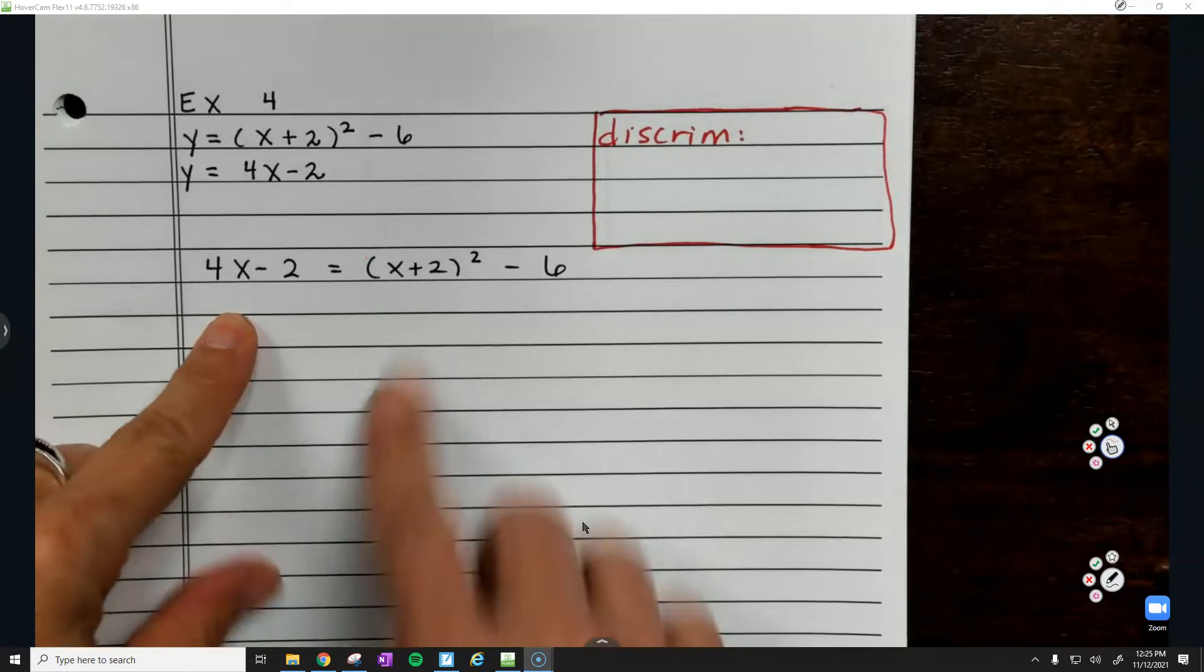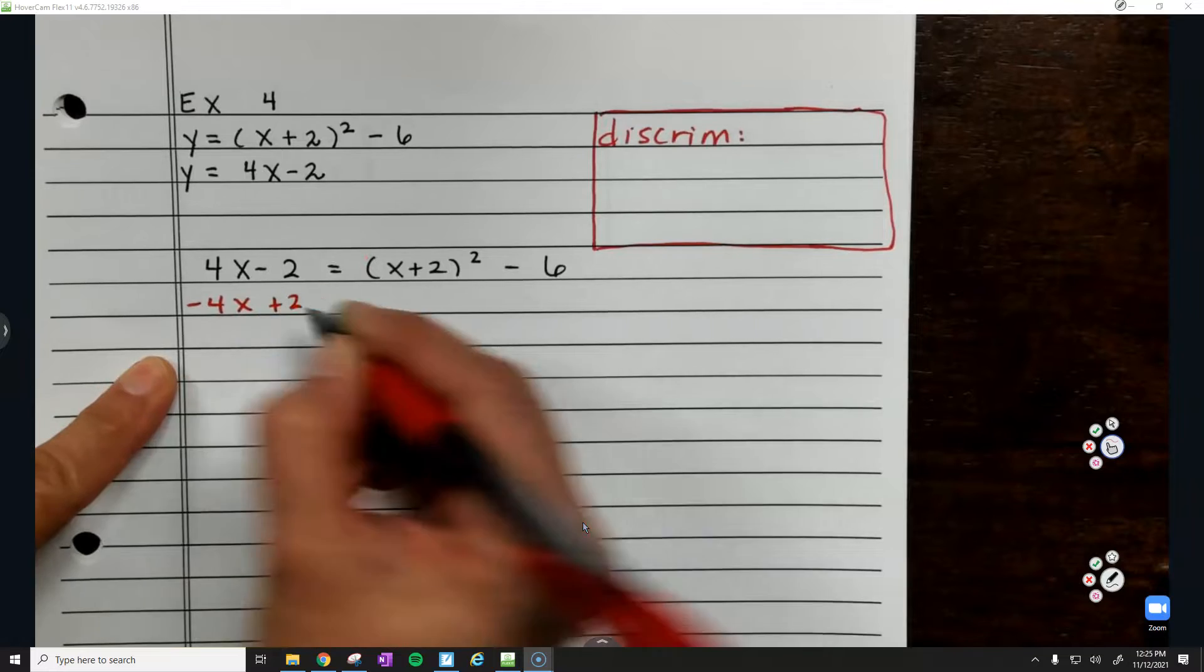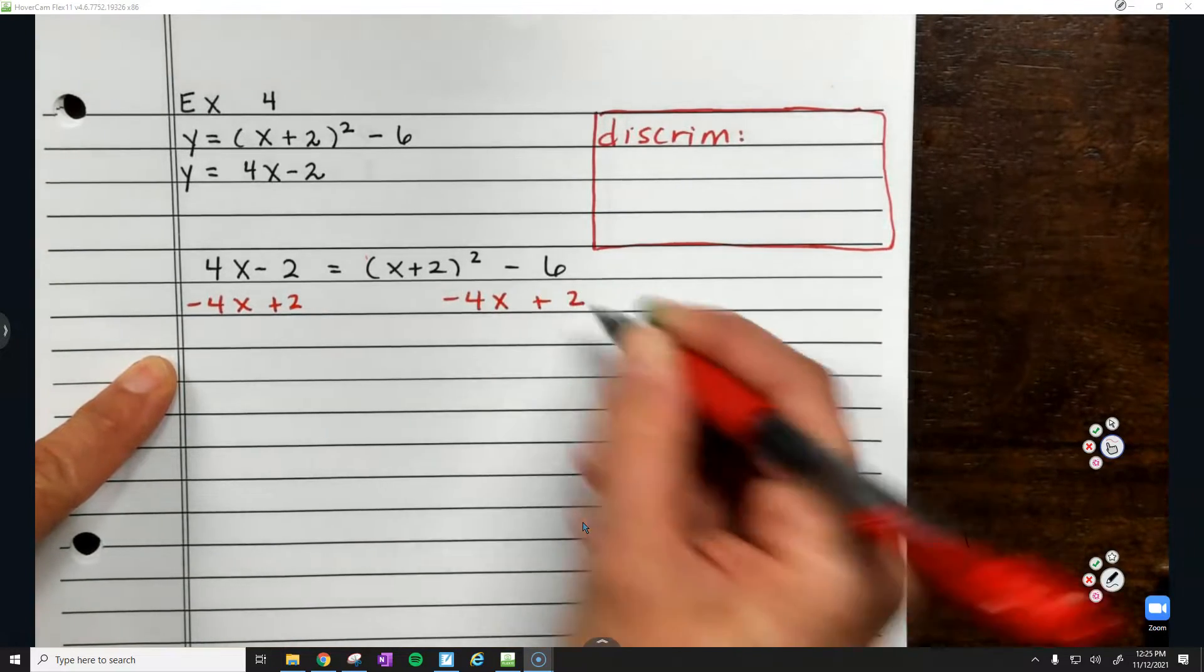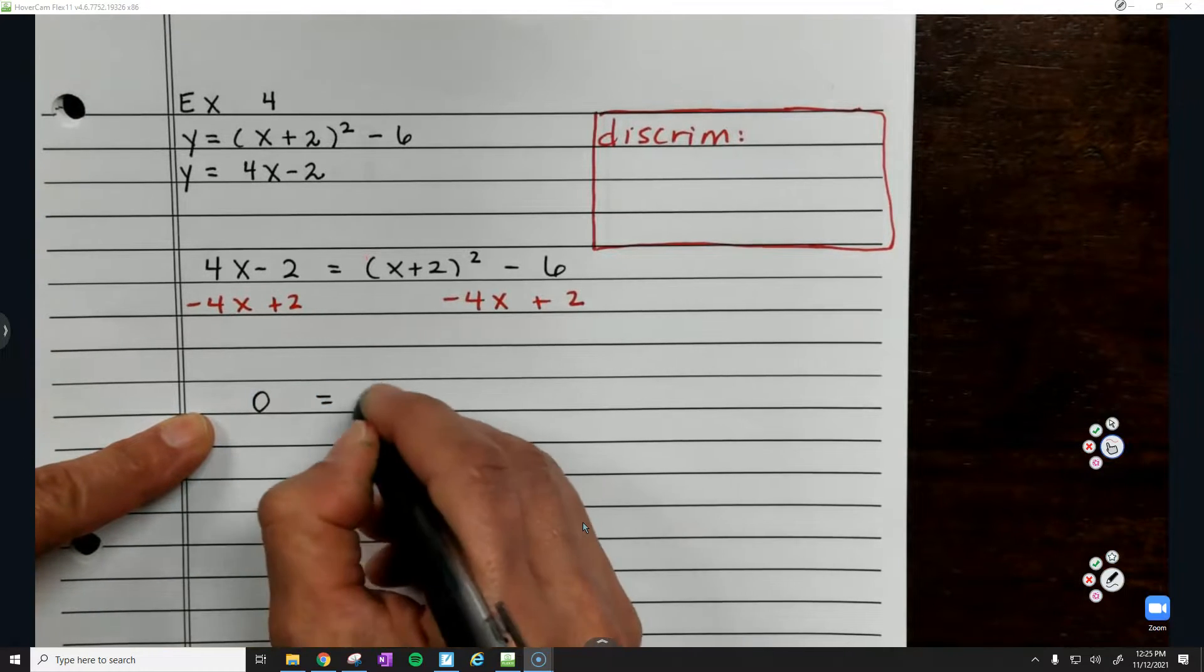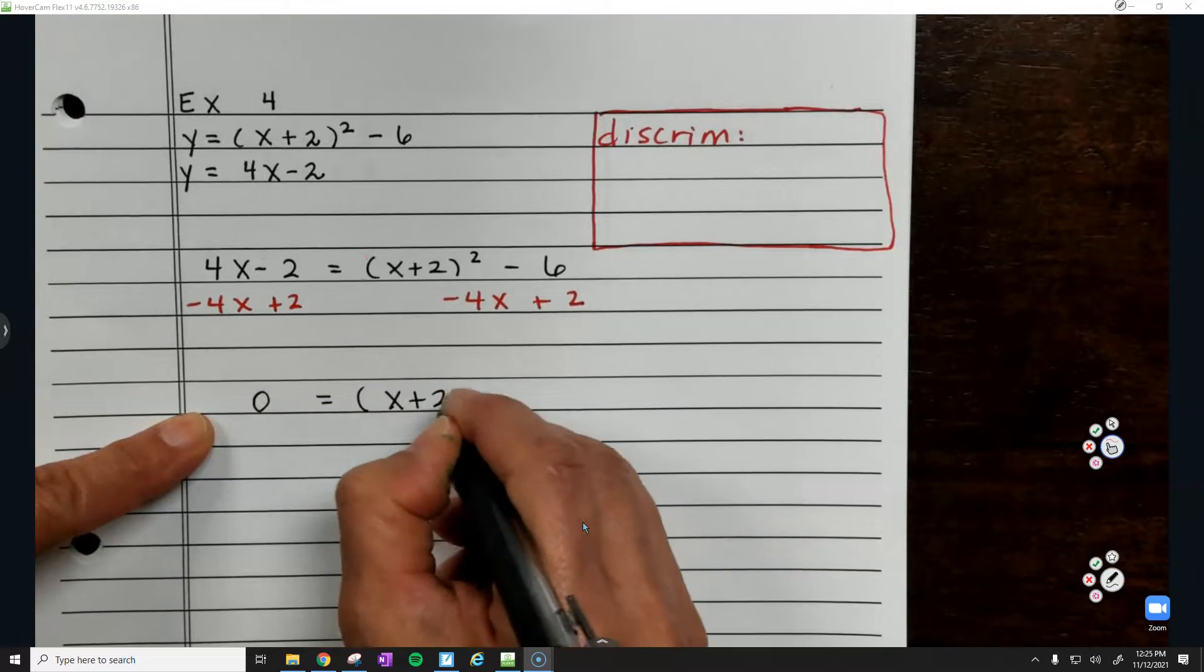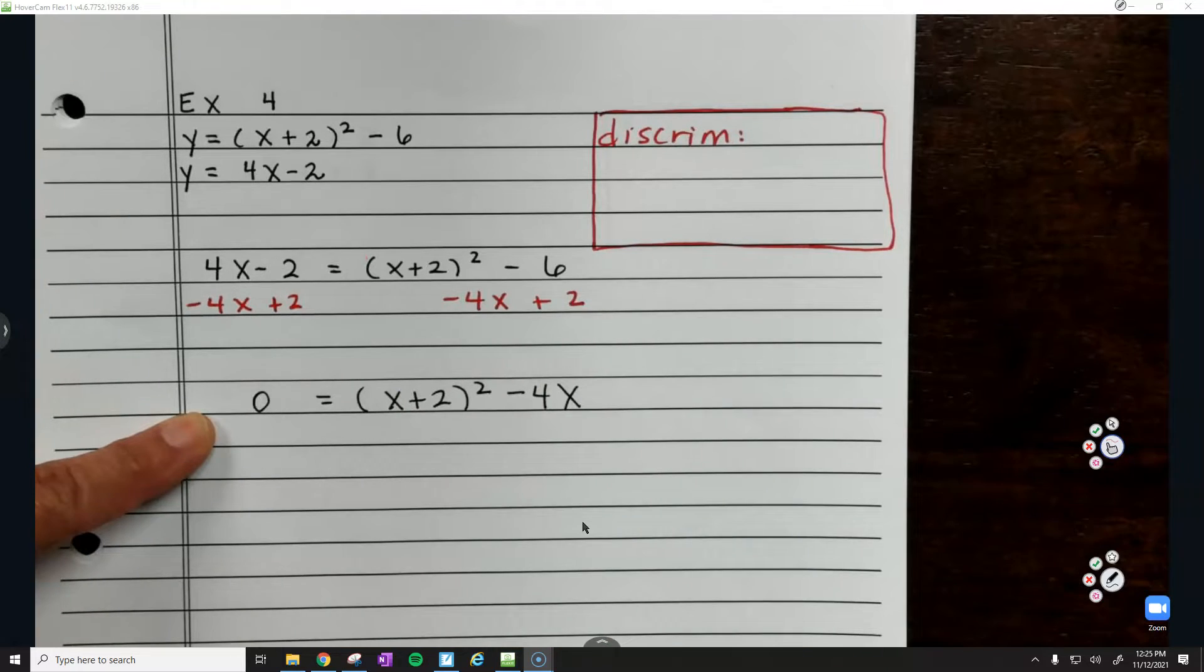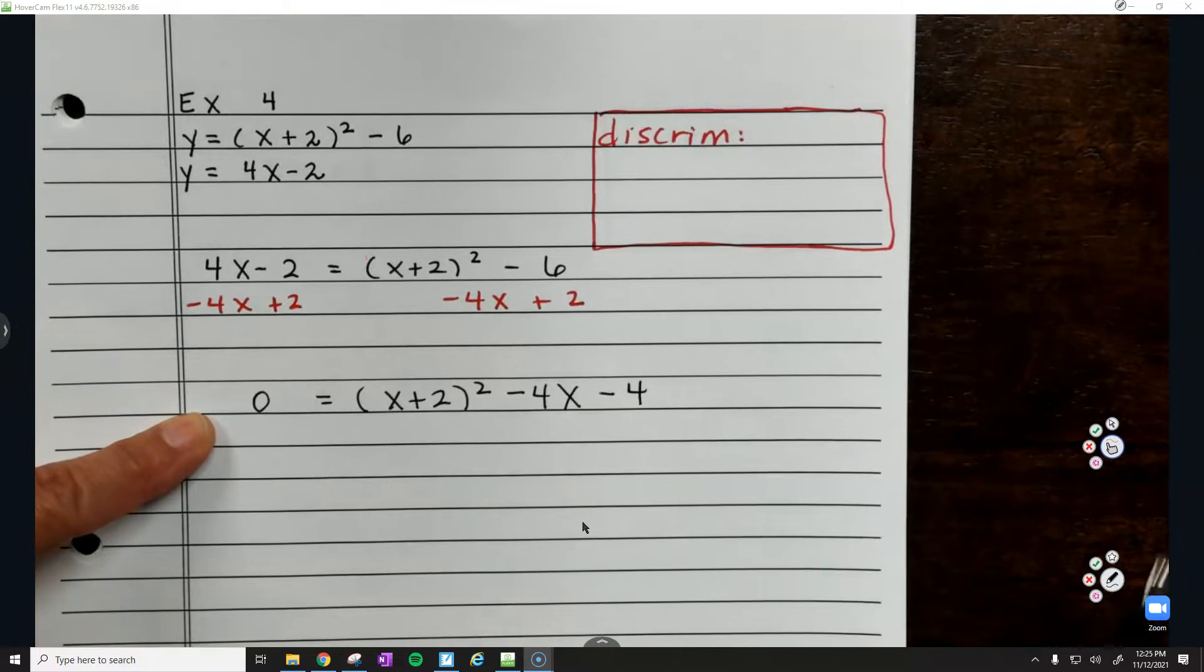Don't mess with that at all. So minus 4x² plus 2, minus, oh, minus 4x plus 2. So this is 0 there, and then this is (x+2)² minus 4x, and then we can do the 6 and the 2.